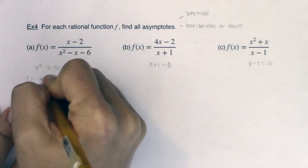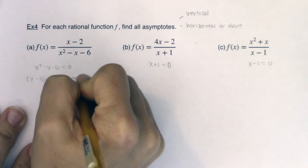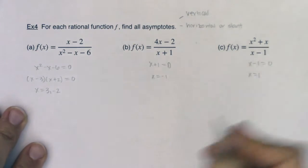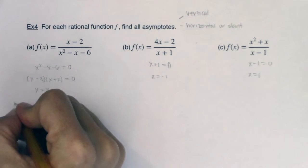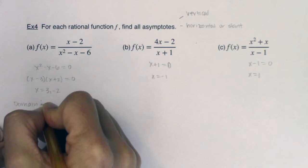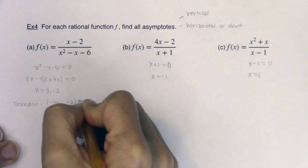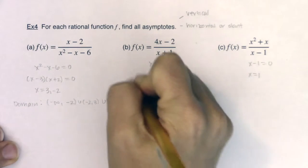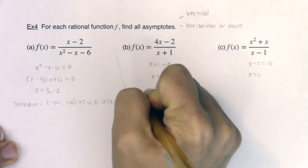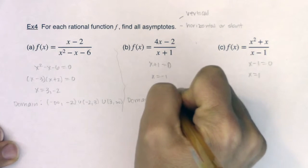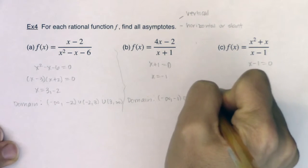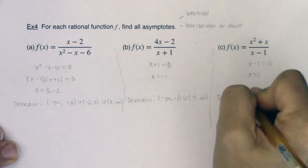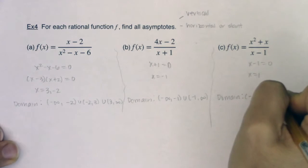We've done this one already but I'll redo it. Factoring gives me three and negative two. Over here I get negative one, and over here I get one. So my domain for the first function is negative infinity to negative two, negative two to three, and three to infinity. My domain for the second is negative infinity to negative one, and negative one to infinity. And the third: negative infinity to one, and one to infinity.